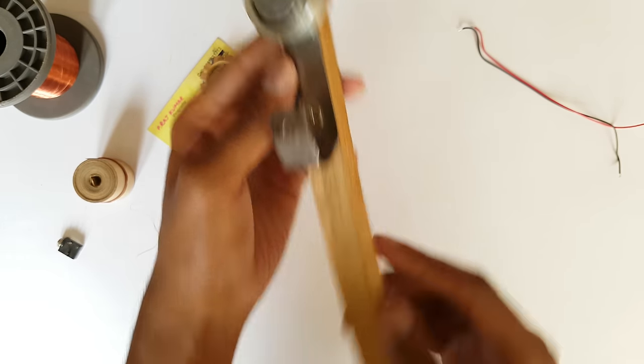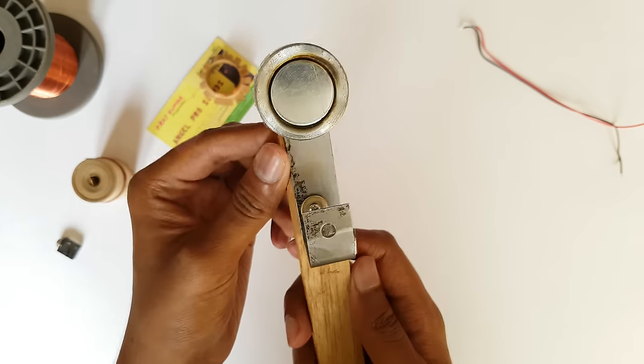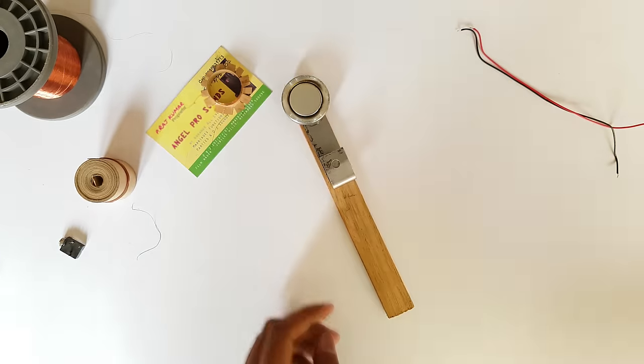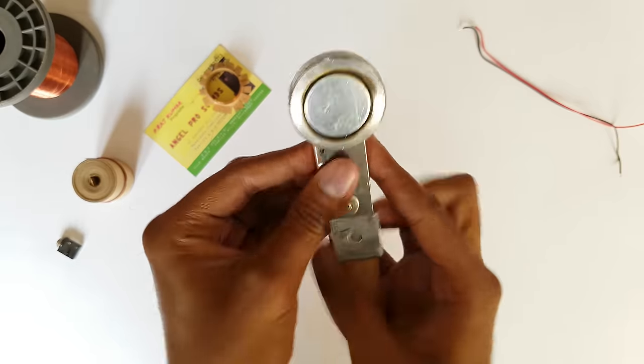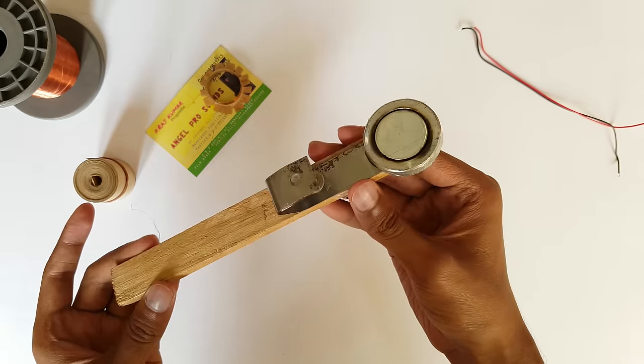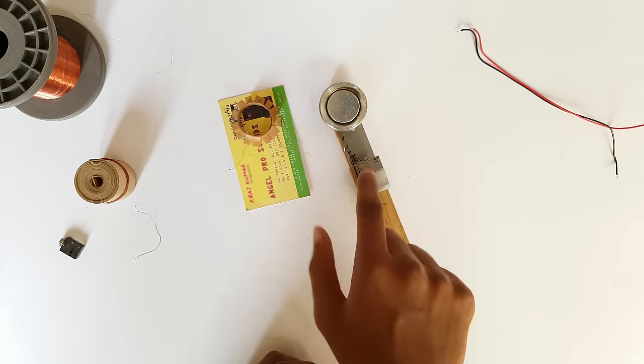Now you need to attach the metal strip and magnet to wooden stick. We are using this wooden stick to hold the microphone. Just use a screw and a washer to fix the metal strip into the wooden stick. Now put some extra tape over it so that it won't move. This is how it should look like.